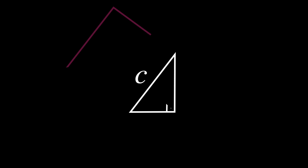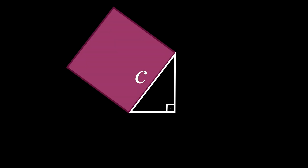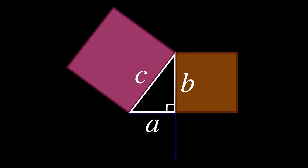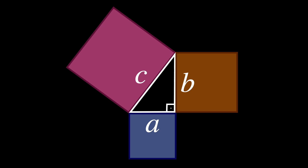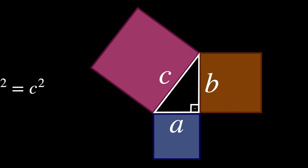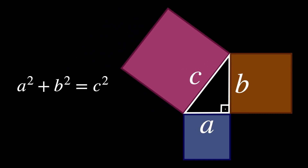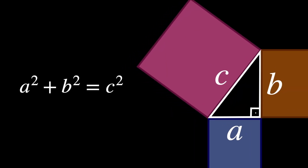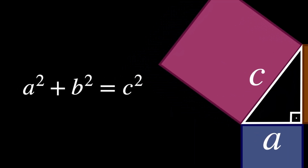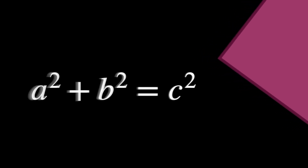We know that the square of the length of the hypotenuse is equal to the sum of the squares of the lengths of the other two sides. This can be written as a squared plus b squared equals c squared. This theorem has been proven in many different ways. What's important to note is that there are infinitely many solutions to this equation.